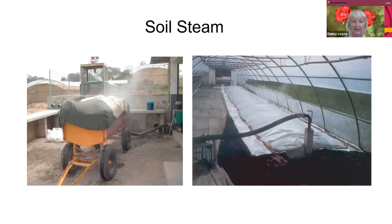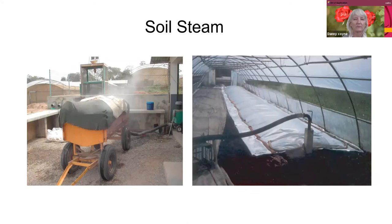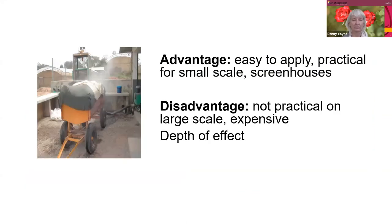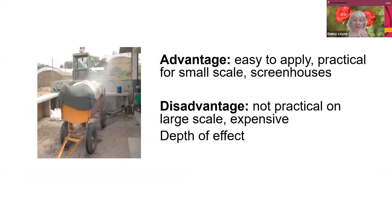Then there's physical management. Soil steaming is a very useful method for non-toxically disinfecting soil. It's quite easy to apply if you've got the equipment, on small-scale screen houses. The main thing to think about with regard to nematodes is the depth of effect — if you have too much soil, the steam is not going to reach all the nematodes.